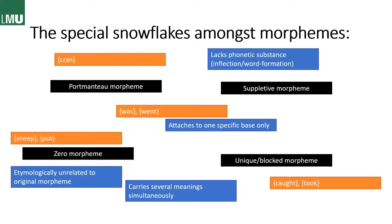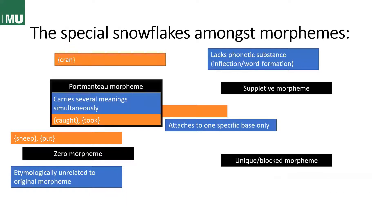Then another jigsaw — the special snowflakes amongst morphemes. They are really important for the exam, just a little hint. First, we have portmanteau morphemes. Portmanteau morphemes carry several meanings simultaneously, whereas the usual case in English would be that one morpheme carries one meaning and another morpheme carries another, and together they have a combined meaning.